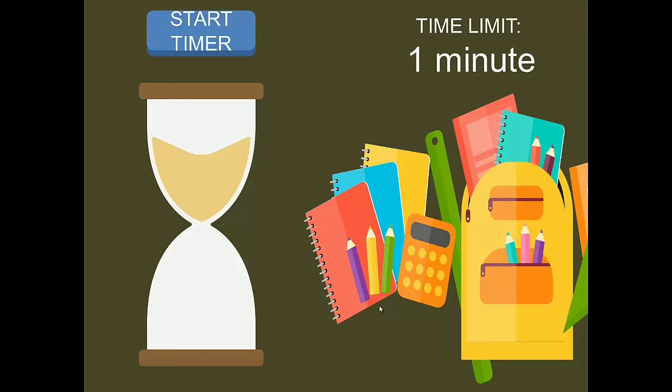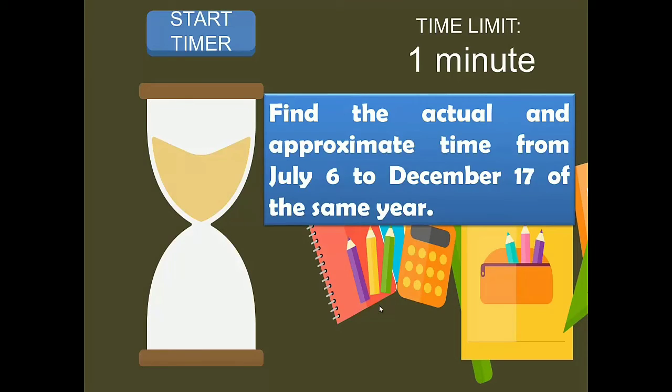Try solving this problem on your own for one minute. Find the actual and approximate time from July 6 to December 17 of the same year.